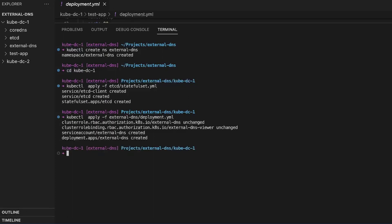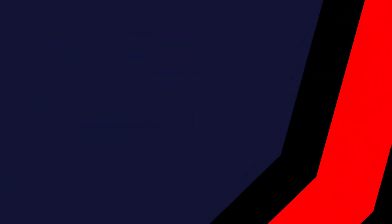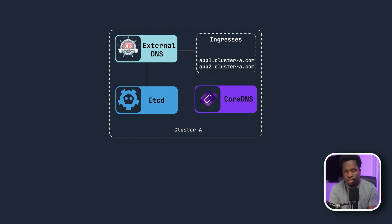External DNS is not itself a DNS server, so we need to run a DNS server alongside External DNS that can make use of the records stored in etcd. This is where CoreDNS comes in. To complete the setup, we deploy CoreDNS in the same namespace and configure it with etcd as a backend, so it is now able to retrieve the DNS information stored by External DNS.